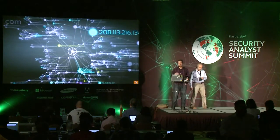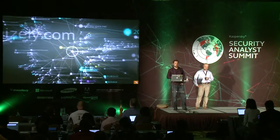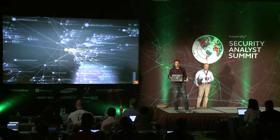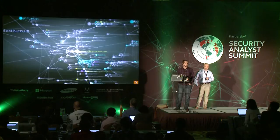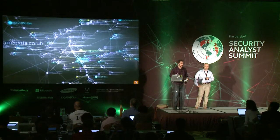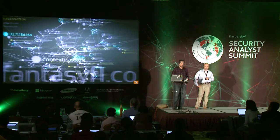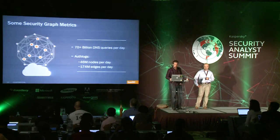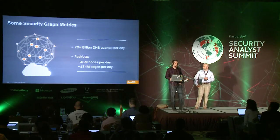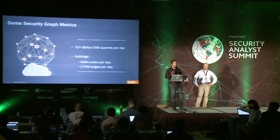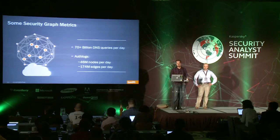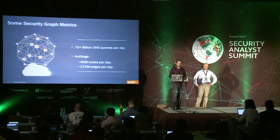In a few words, what we do at OpenDNS is build a graph database inferred from our DNS logs. Here you have an example of a dataset extracted from Wikileaks.org — we have different kinds of entities: domain IPs, ASNs, WHOIS data, and co-occurrences related domains. In terms of scale, we're seeing about 70-plus billion DNS queries per day. After refinement on the authoritative side considering only domains and IPs, that gives us a graph of about 46 million nodes and 174 million edges per day.